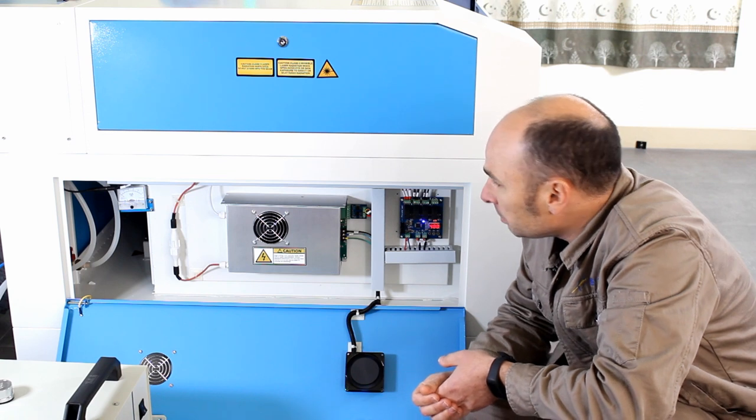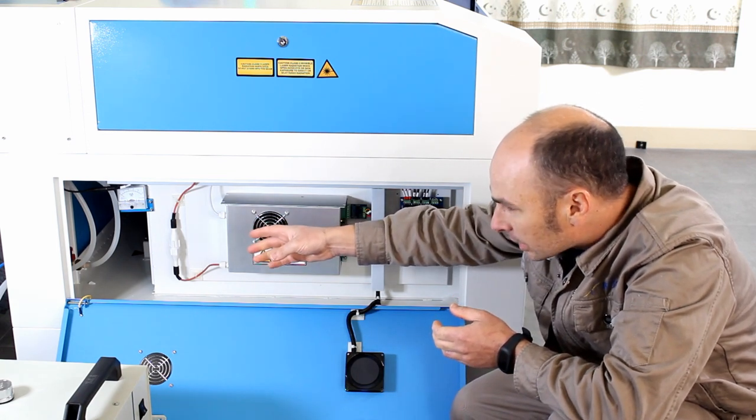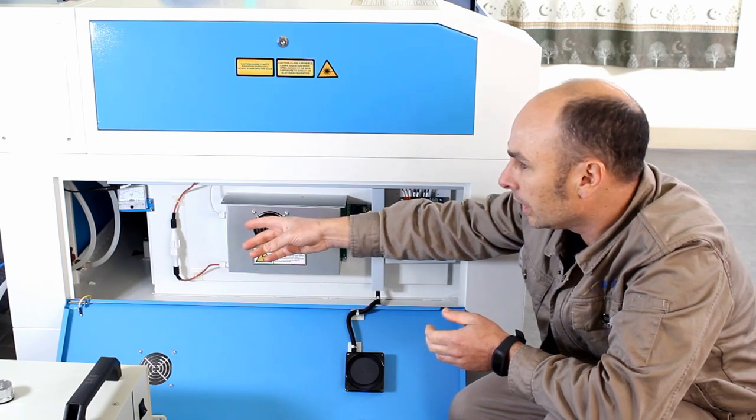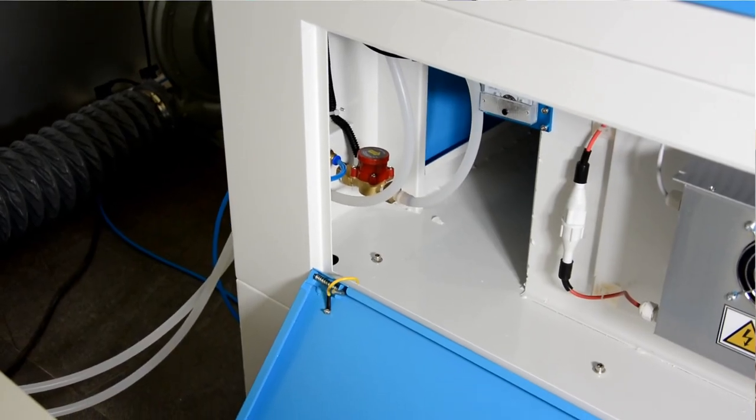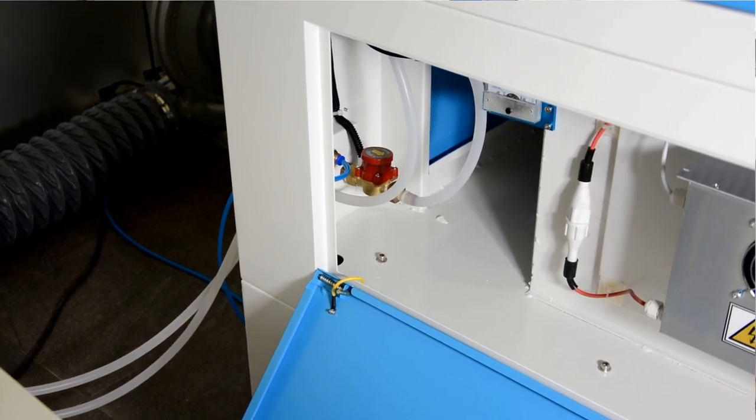Last thing. Probably you might not be able to see but actually in the corner over here you can see just the little trail lead of the actual water interlock system. This is a flow switch. This is basically monitoring your water cooling.